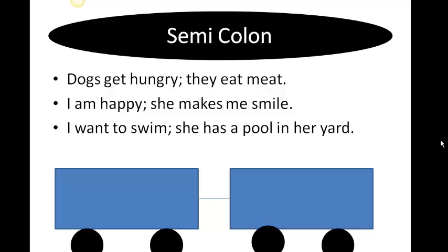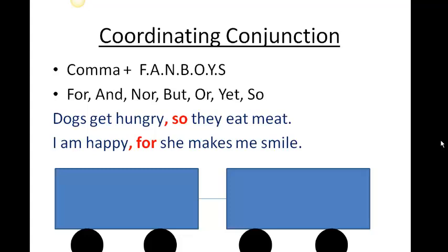The last method is just linking both independent clauses with a semicolon. For example: 'Dogs get hungry; they eat meat.' 'I am happy; she makes me smile.' 'I want to swim; she has a pool in her yard.' The semicolon connection method is less common in American style of writing — it is more common in the British style. It is also very common in poetry. The most common form is the FANBOY.